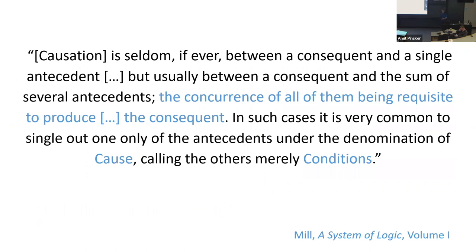It goes back to Mill and many other people who actually said the following: causation is seldom, if ever, between a consequent and a single antecedent. It is usually between a consequent and the sum of several antecedents — the concurrence of all of them being requisite to produce the effect. In such cases it is very common to single out one only of the antecedents under the denomination of 'cause,' calling the others merely 'conditions.'